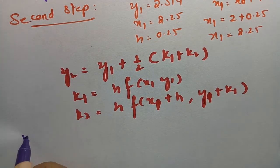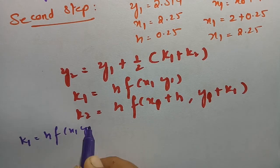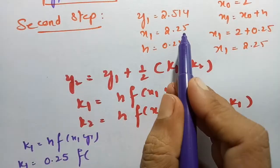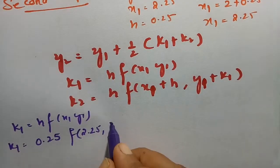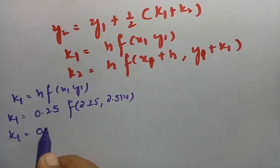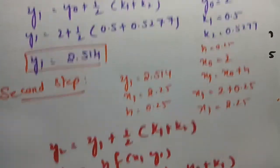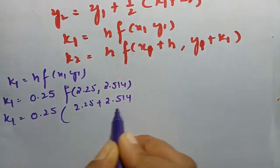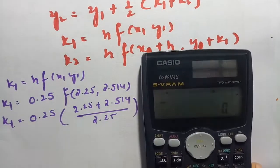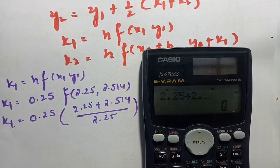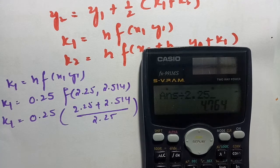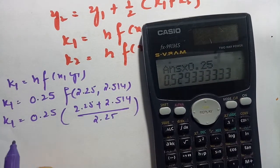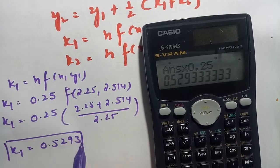Let's start with k₁ for the second step. k₁ = h · f(x₁, y₁), where h = 0.25, x₁ = 2.25, and y₁ = 2.514. Using f(x, y) = x + y/x: k₁ = 0.25 × (2.25 + 2.514/2.25) = 0.25 × (2.25 + 1.1173). The answer is 0.5293. So k₁ = 0.5293.